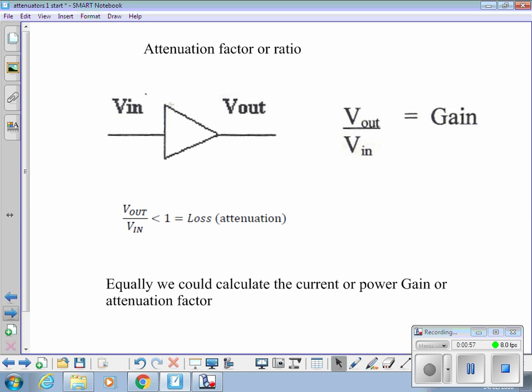Effectively a negative gain is attenuation. We could equally calculate the power gain or the current gain of a circuit. We don't just necessarily want to be interested in voltage gain, although in what we're doing that is what we're going to deal with. But we could be interested in power gain and also current gain.